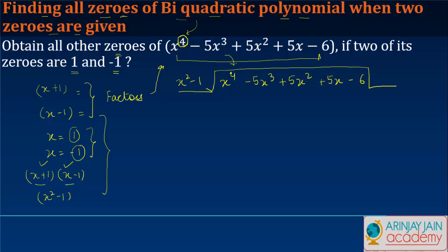So I would just simply write down the polynomial as it is and divide it by x^2 - 1 and let's see what we get.